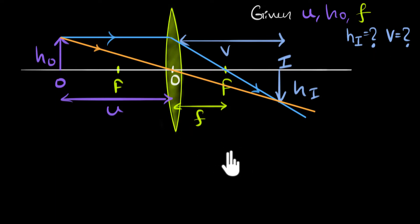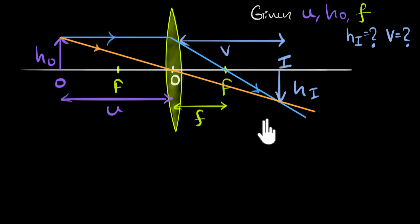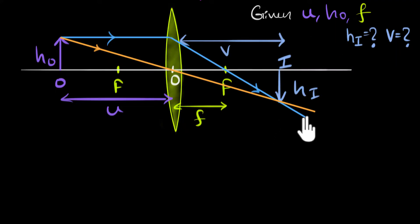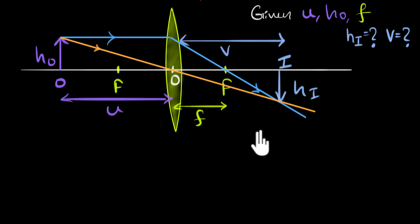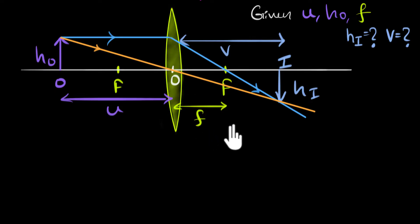The trick over here is going to be very similar to what we have done when it comes to mirrors. The idea is we have to find similar triangles which have these as their side lengths, and then use the properties of those similar triangles to make a relationship between them. Pause the video and see if you can find some pairs of similar triangles in this figure.